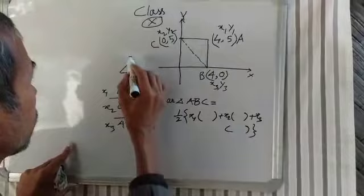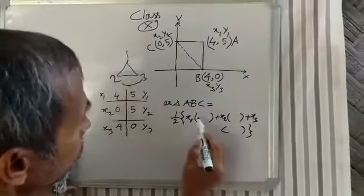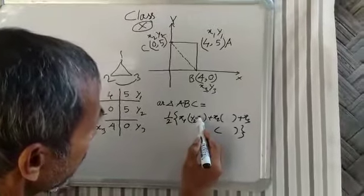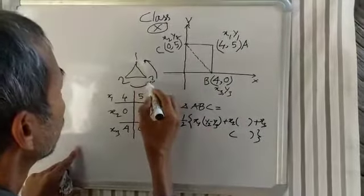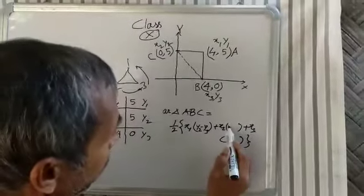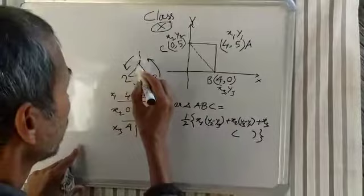We have point 1, point 2, point 3. The formula components are: y2 minus y3, y3 minus y1, and y1 minus y2.